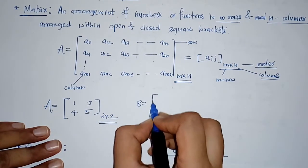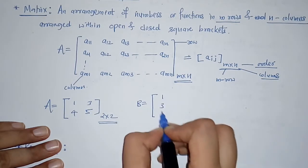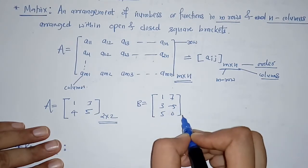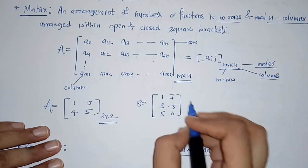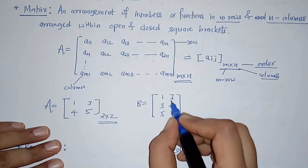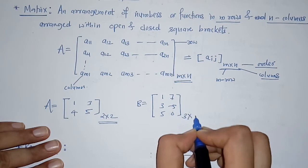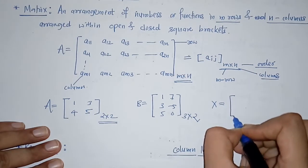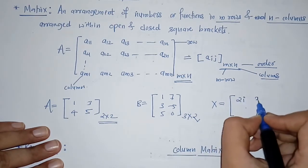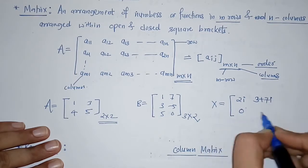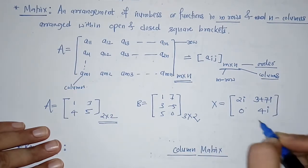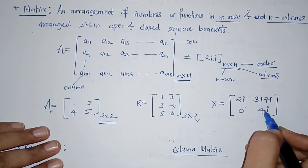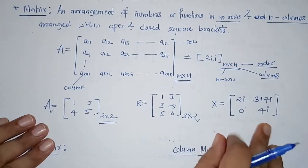Similarly, we can take another example. If we have elements 2i, 3 plus 7i, 0, and 4i — these numbers are taken as complex numbers. So all these are examples of a matrix.